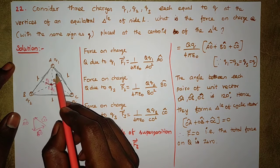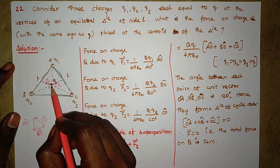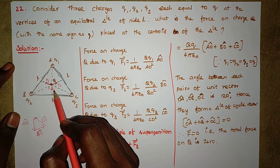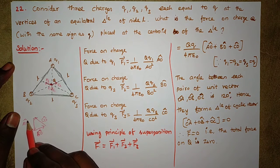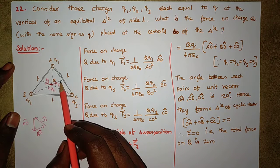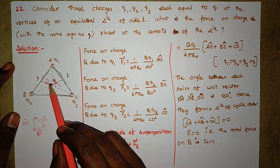In the triangle, let O be the centroid. Then F1 is in the direction of OA cap, F2 is in the direction of OB cap, and F3 is in the direction of OC cap.